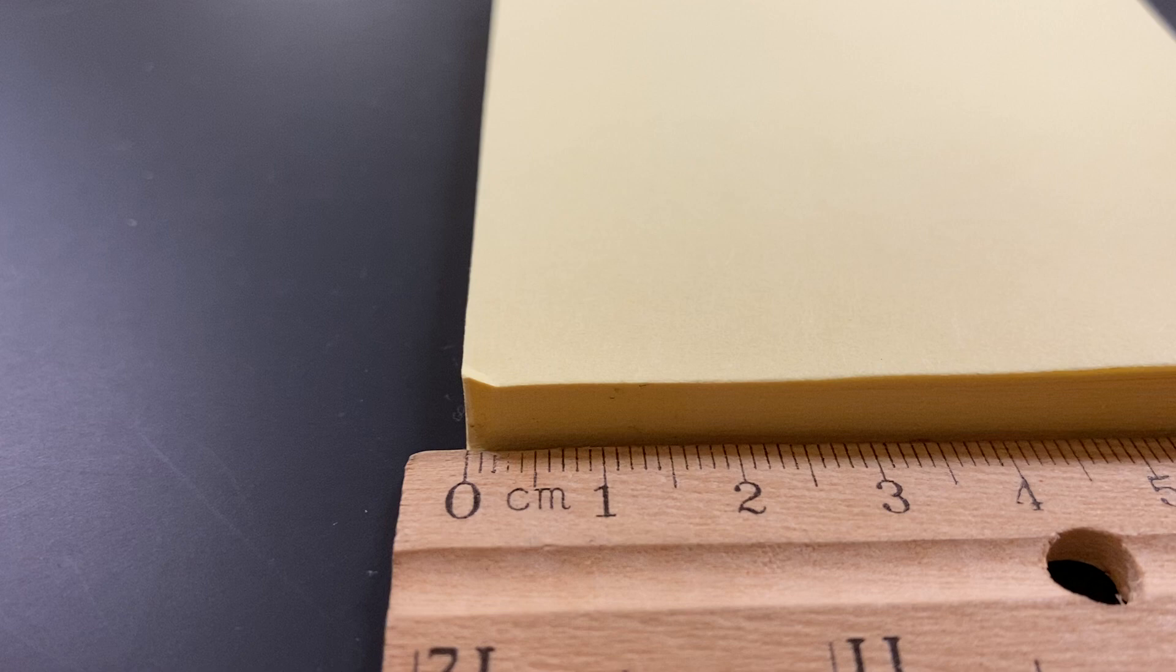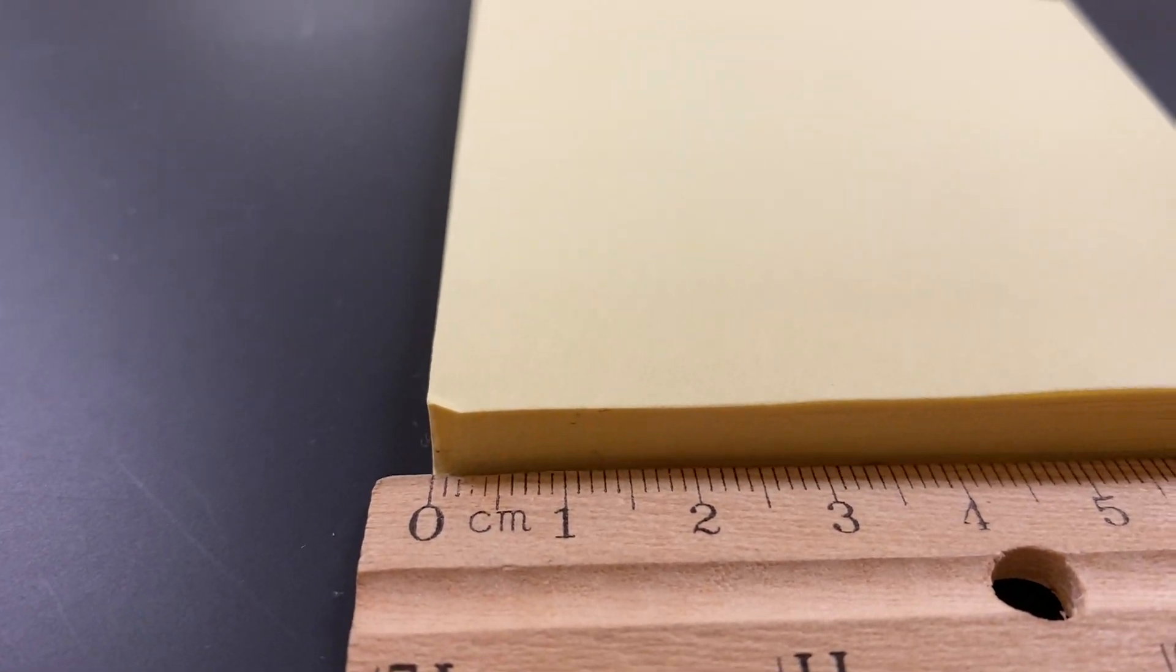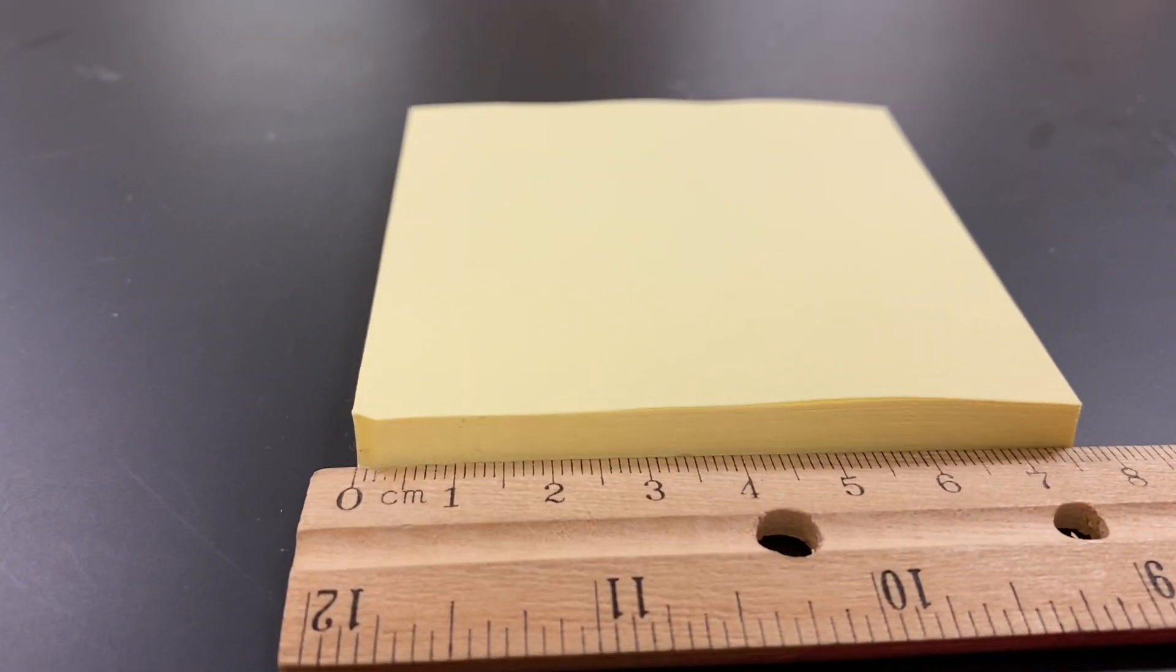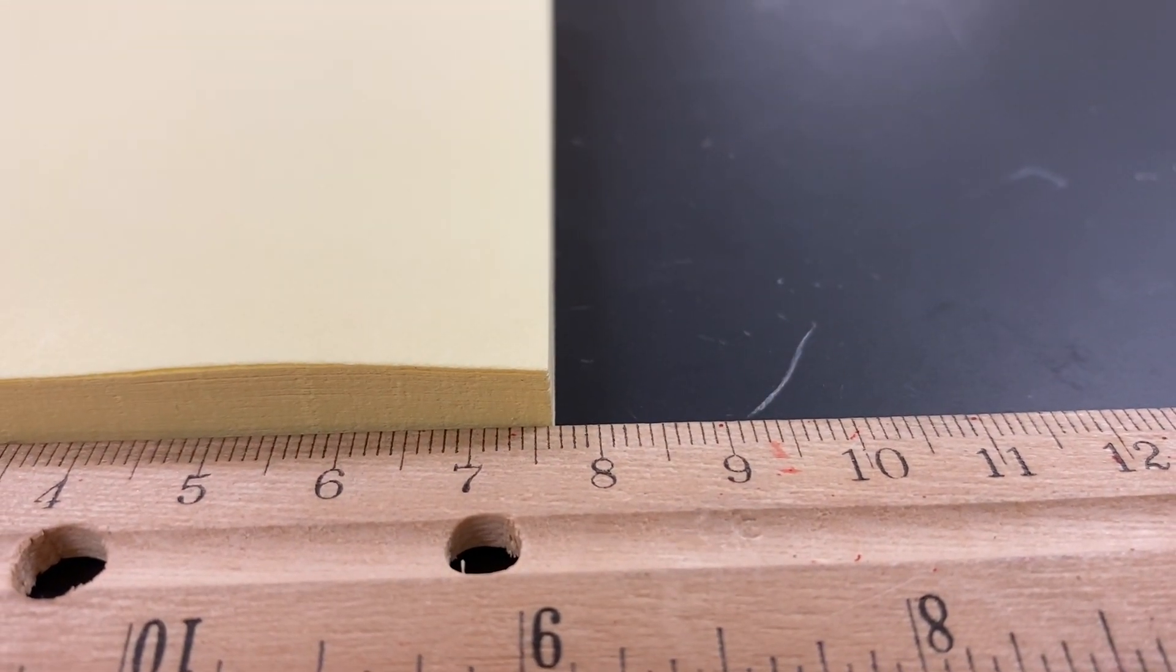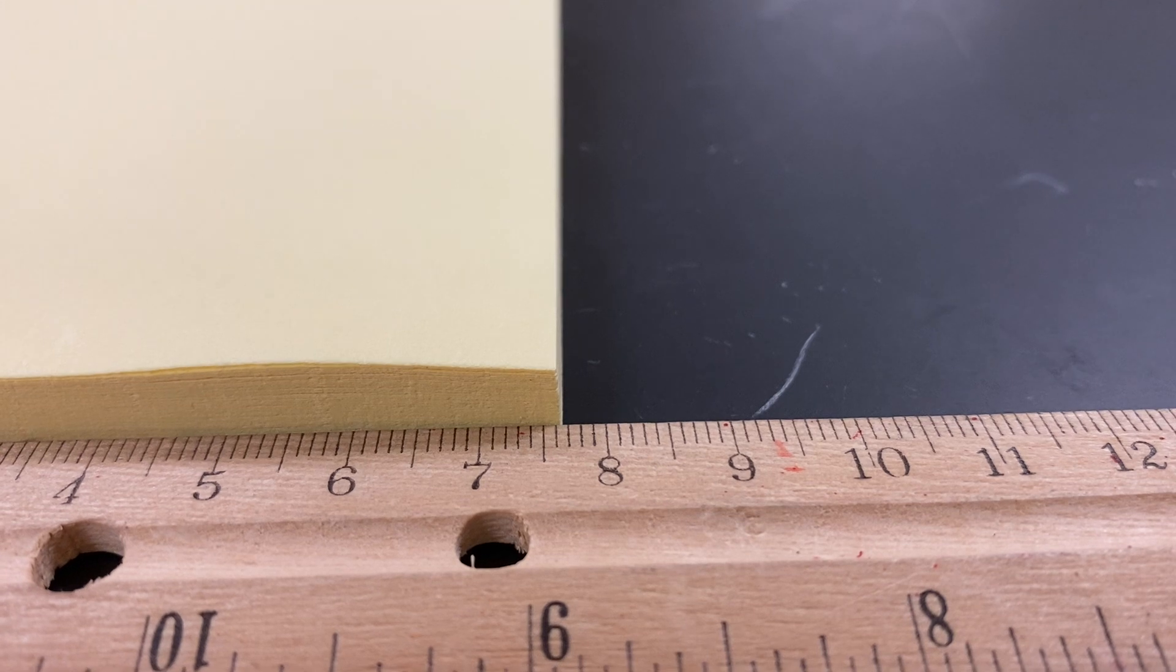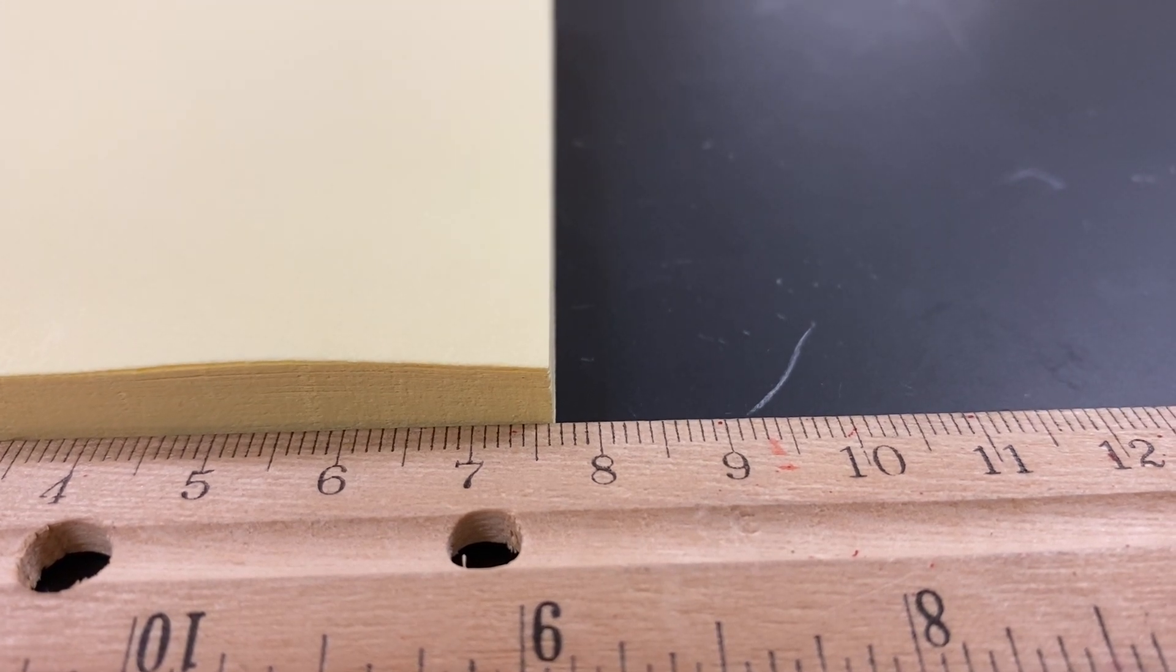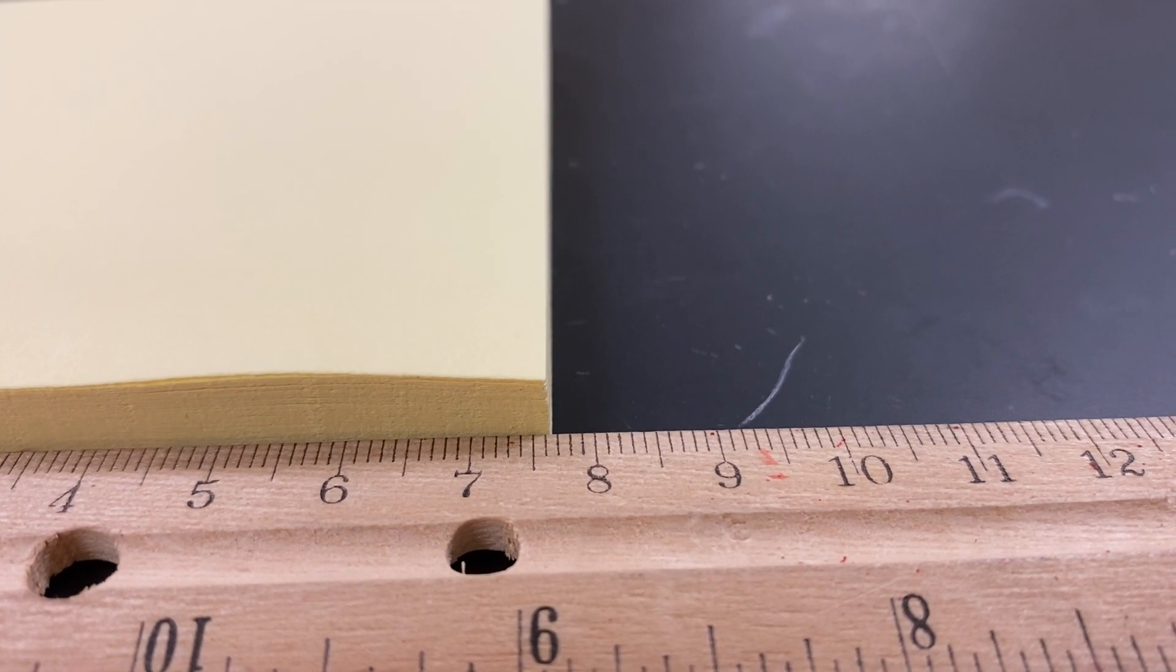So here we have the ruler matched up with the notepad at zero, or sticky notepad, and we're going to look over here. Is it a true square? Go ahead and record the length, I'm sorry, the width now of the sticky notepad.